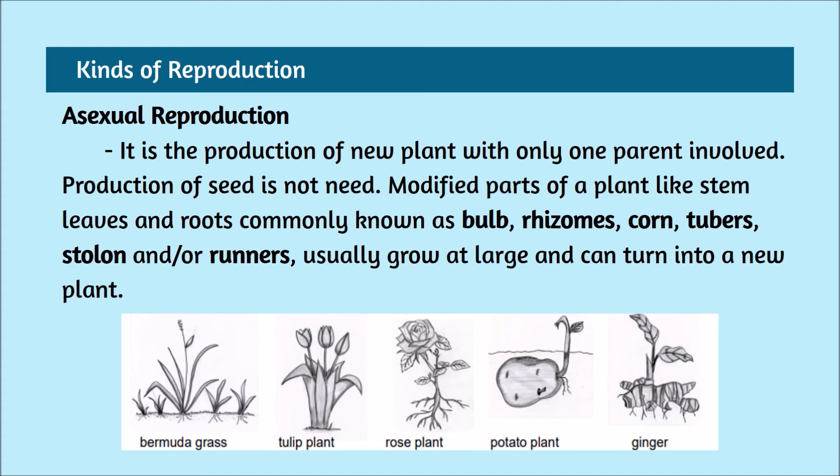Modified parts of a plant like stem, leaves, and roots — commonly known as bulbs, rhizomes, corms, tubers, stolons, and runners — usually grow at large and can turn into a new plant.